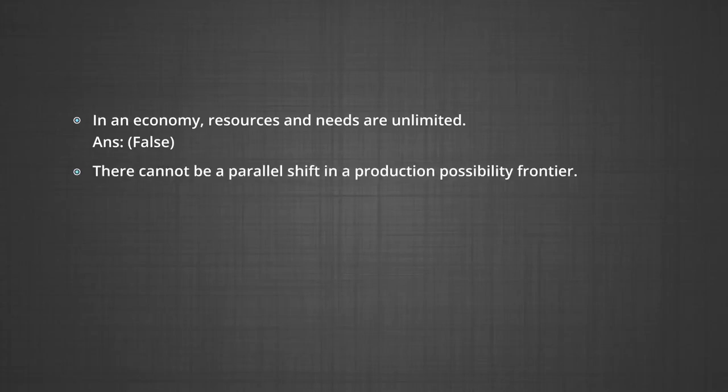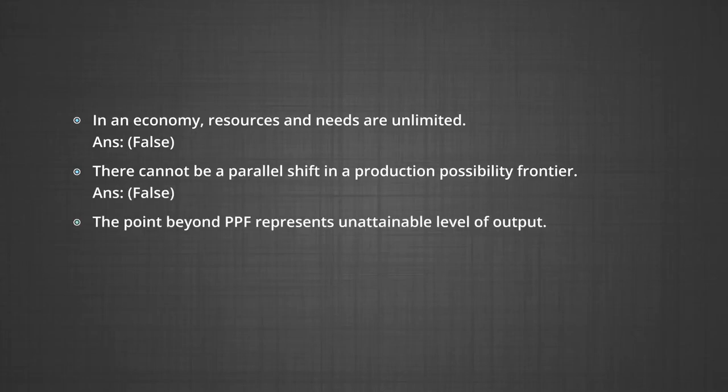Let us use a small exercise to check if we've understood the concepts discussed so far. State whether the following are true or false. A: In an economy, resources and needs are unlimited. Answer: False. B: There cannot be a parallel shift in the production possibility frontier. Answer: False. C: The point beyond a PPF represents unattainable levels of output. Answer: True.